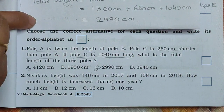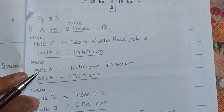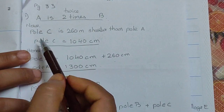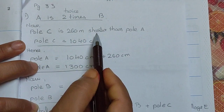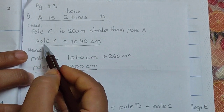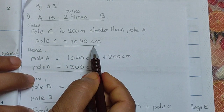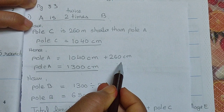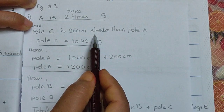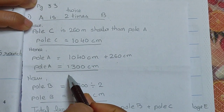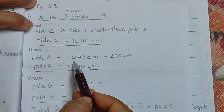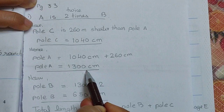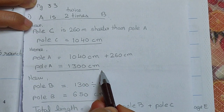Pole A is twice pole B. Pole C is 260 cm shorter than pole A. Pole C is given as 1040 cm. So pole A equals 1040 cm plus 260 cm. 1040 plus 260 equals 1300 cm. So pole A is 1300 cm.